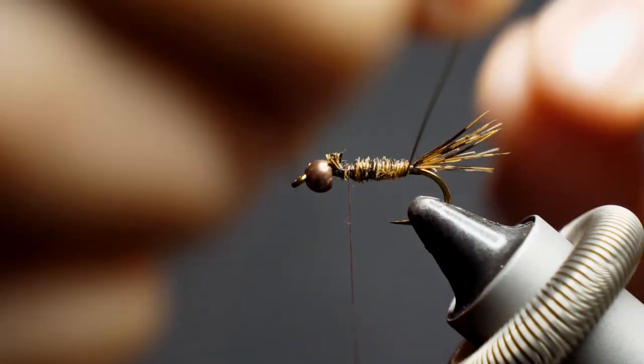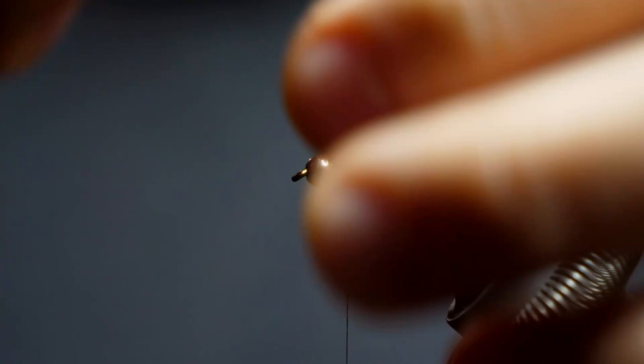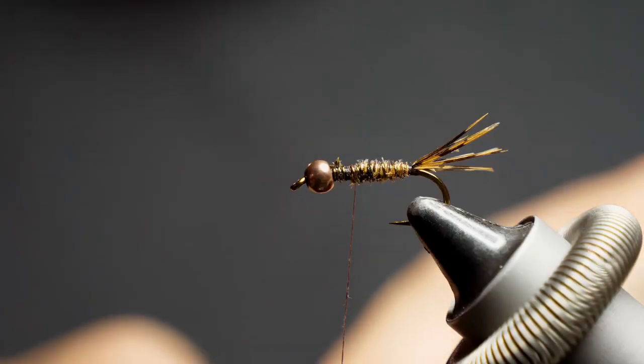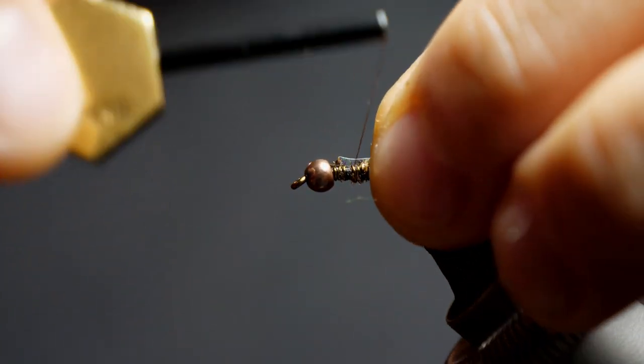Now we are going to wrap the wire rib, and that has to be in the opposite direction. So what I like to do is make my segmented body, but then I go well past the thread itself and do a whole bunch of wraps with the wire to help keep it from undoing when I lock it in place.